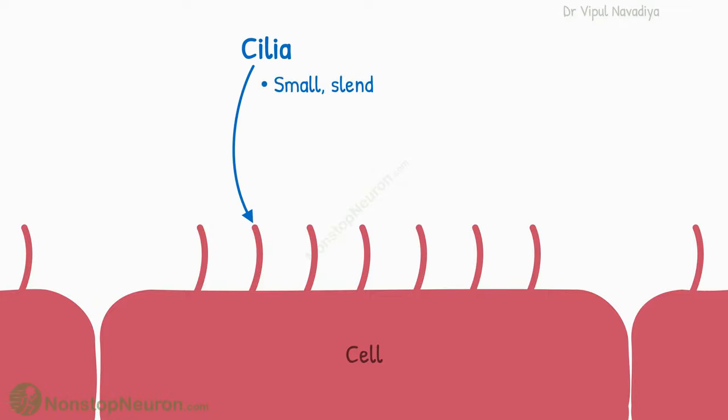Cilia are small, slender, and hair-like structures on the surface of some cells. They can be non-motile or motile.